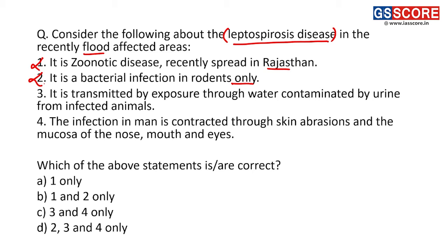Third statement: it is transmitted by exposure through water contaminated by urine from infected animals. If a person is exposed to water contaminated by urine of infected animals, that person will suffer from leptospirosis. Third statement is correct. The infection in man is contracted through skin aberrations and mucosa of the nose, mouth and eyes. Fourth statement is also correct. Both third and fourth statements are correct, and that is why the answer is C — 3 and 4 only.